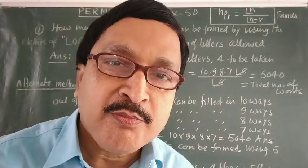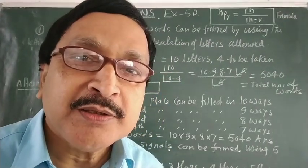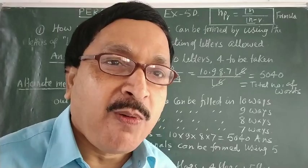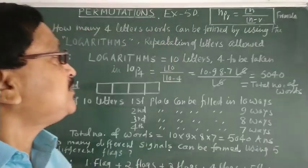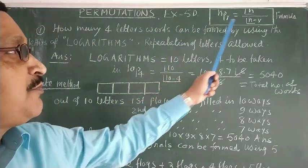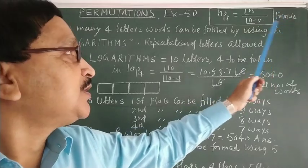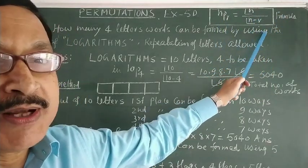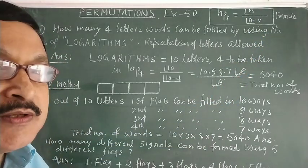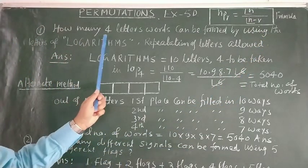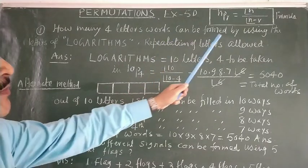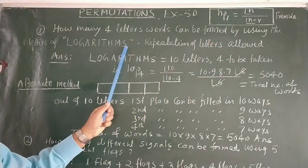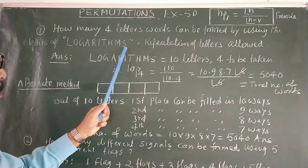Hello students, it's time to share the next video on permutations. This is from Exercise 5D and the formula to be used is nPr = n! / (n-r)!. The first question: how many four-letter words can be formed by using the letters of 'LOGARITHM'? There are 10 letters in LOGARITHM.